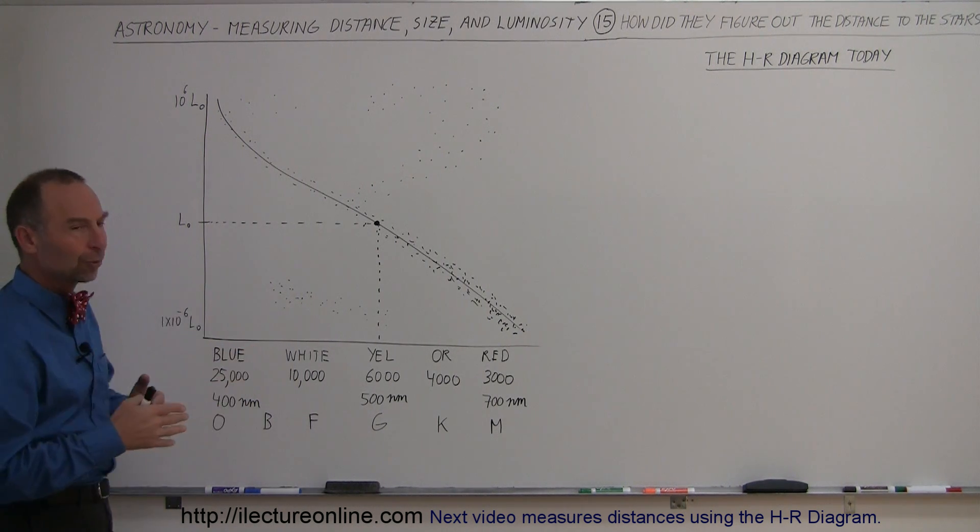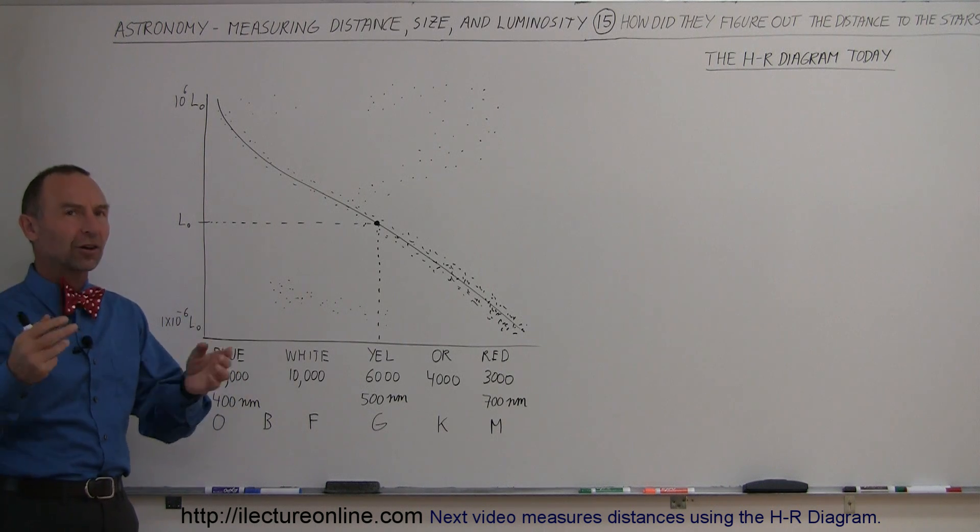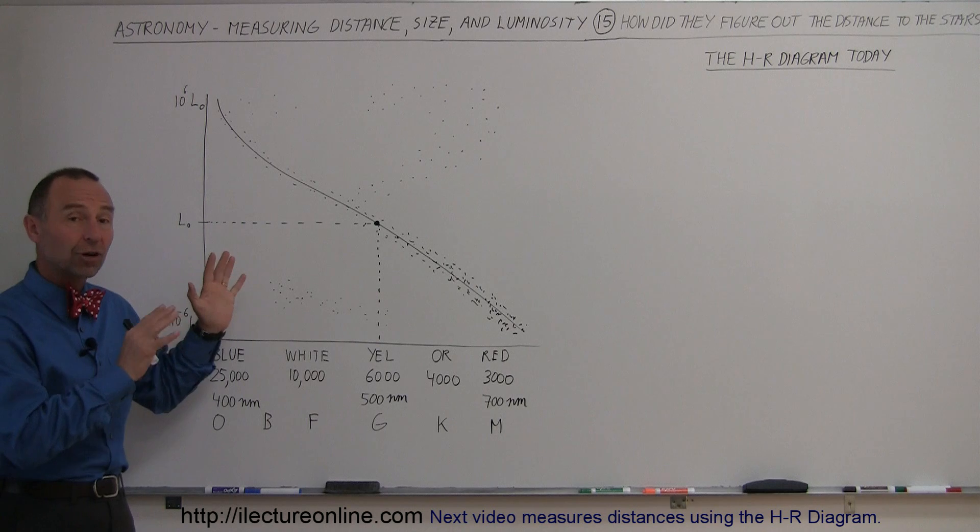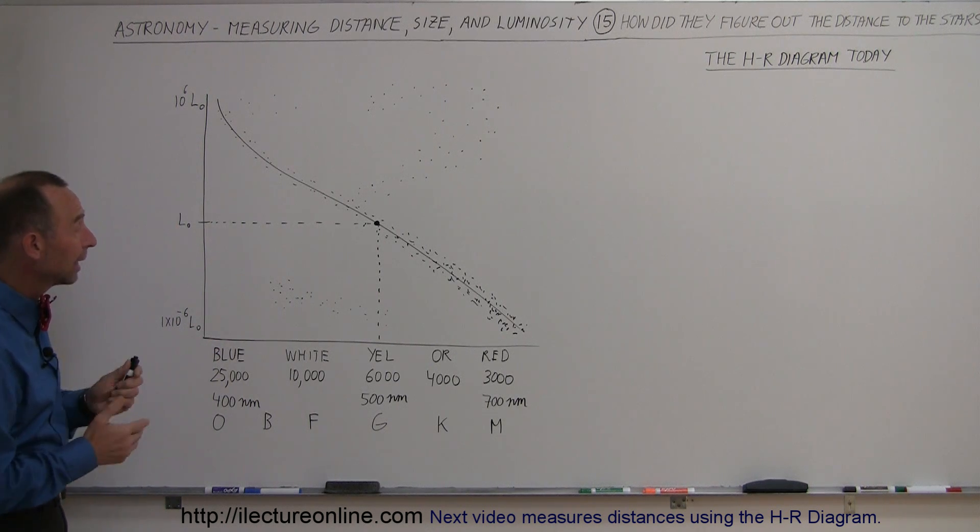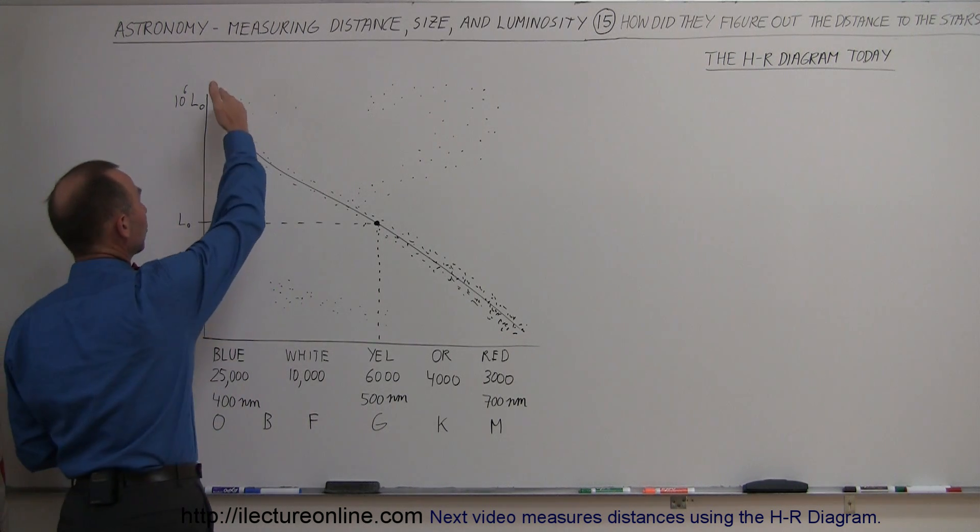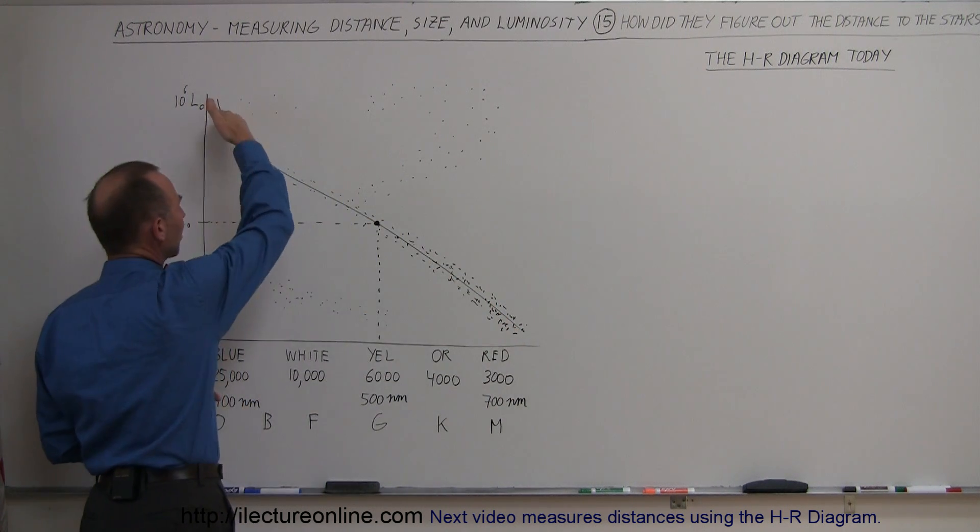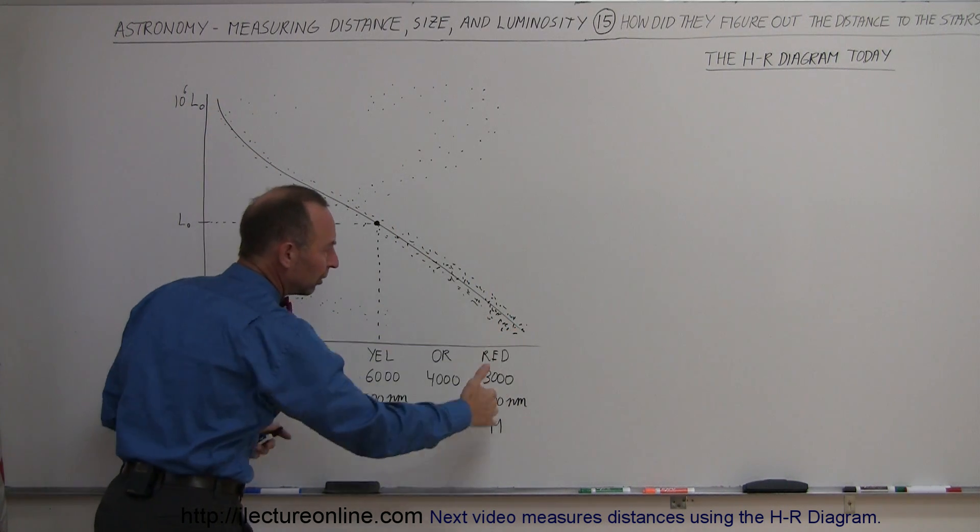Notice there's many more stars because we've been looking at thousands and thousands of stars. Place those stars on the HR diagram, get a much better picture of what the HR diagram looks like. And notice that the vast majority of the stars are lying along this line here. Notice it's no longer a straight line, has a little bit of an S-curve to it.